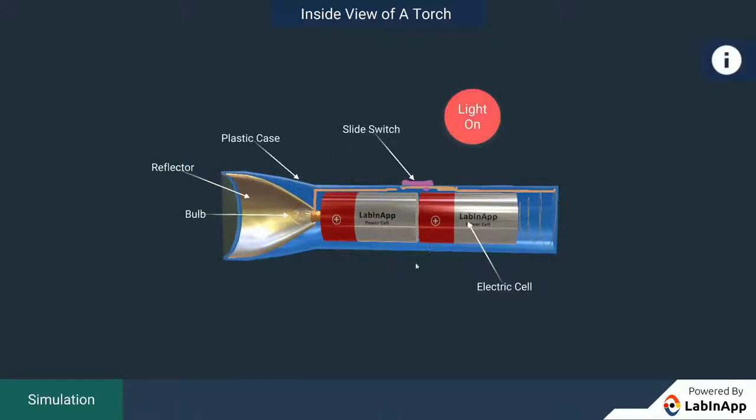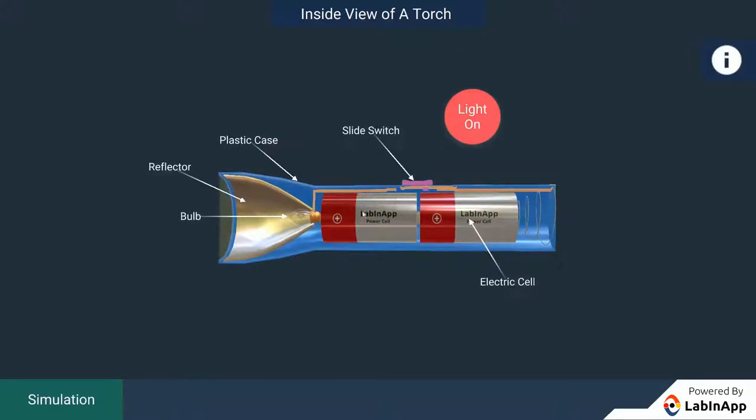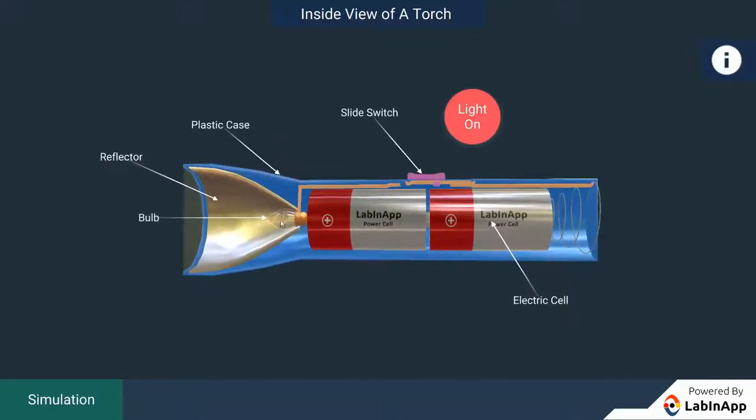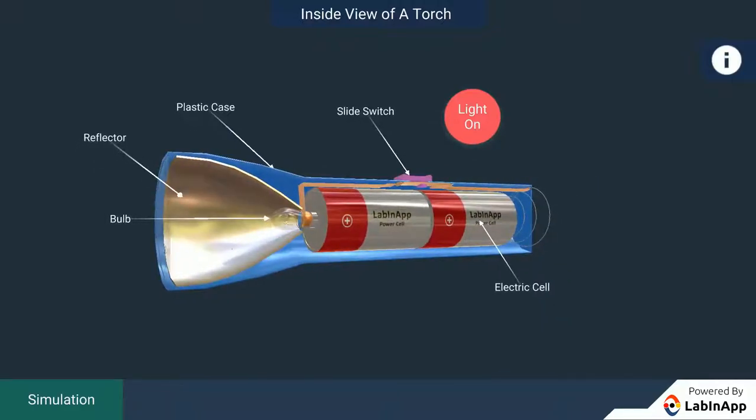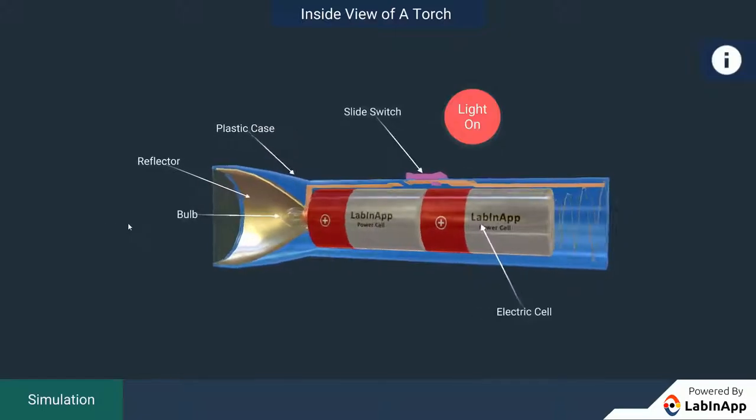Here we can see that the torch consists of electric cells, a torch bulb, wires, switch and a reflector. The terminals of the cell are connected to the bulb with the help of a thick wire.